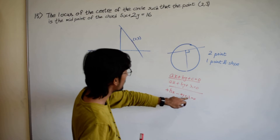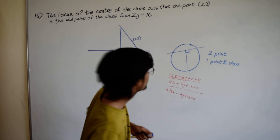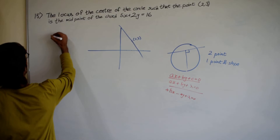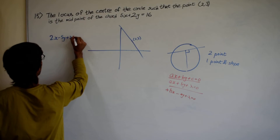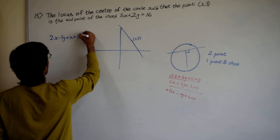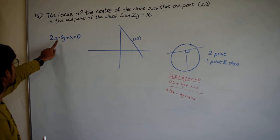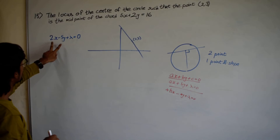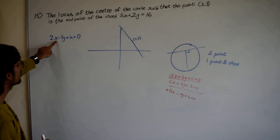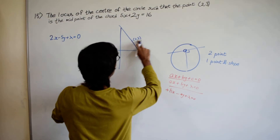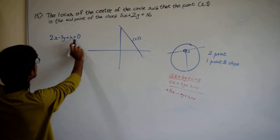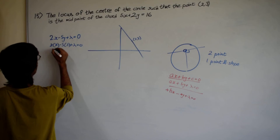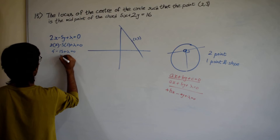Lambda is found by using additional information. For our line 5x plus 2y equals 16, the perpendicular line would be 2x minus 5y plus lambda equals 0. Lambda is found by substituting the midpoint (2, 3), which must lie on this perpendicular bisector: 2 times 2 minus 5 times 3 plus lambda equals 0, giving 4 minus 15 plus lambda equals 0, so lambda equals 11.